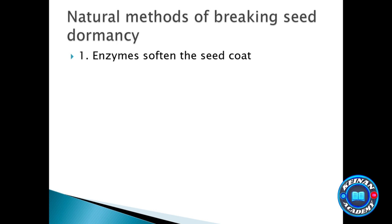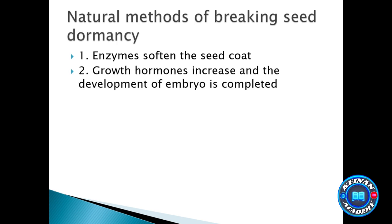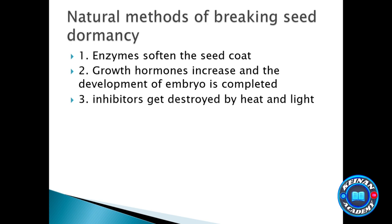Another natural way is through hormones. A seed may delay growth due to an underdeveloped embryo, but if the right hormones are present, dormancy will be broken. Another method involves inhibitors: some inhibitors can be destroyed by heat and light, so the natural presence of heat and light will destroy these inhibitors and break dormancy.